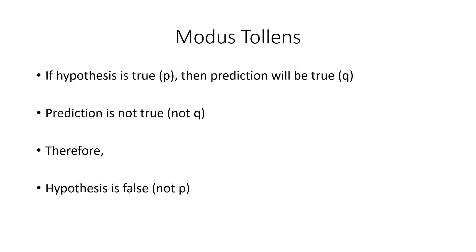As opposed to using modus ponens — simply confirming the hypothesis — which always leaves open the possibility that the hypothesis is false even when a prediction comes true. It's much more powerful to ask: how easily can we show it to be false, rather than how easily we can show it to be true? That gives us greater confidence in the hypothesis.